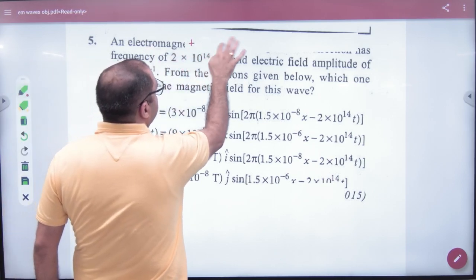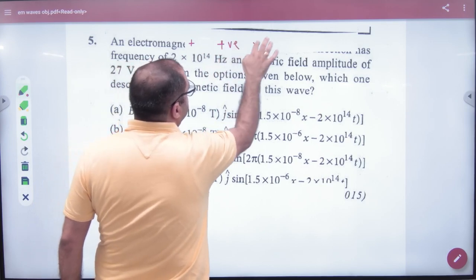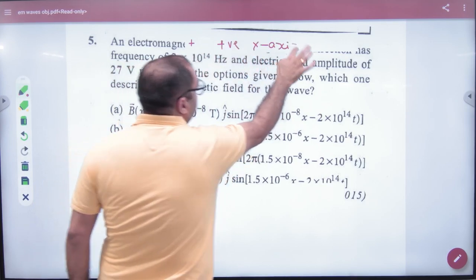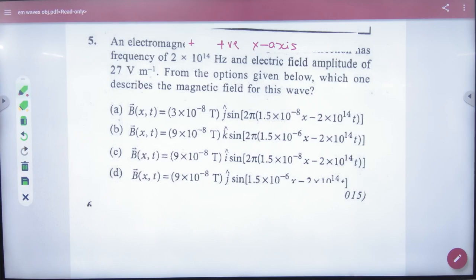Electromagnetic wave is moving along positive x-axis given. So EM wave is moving along positive x-axis. Frequency is moving along positive x-axis.